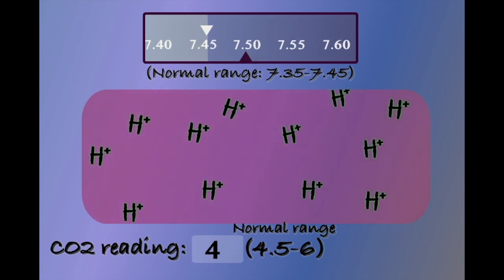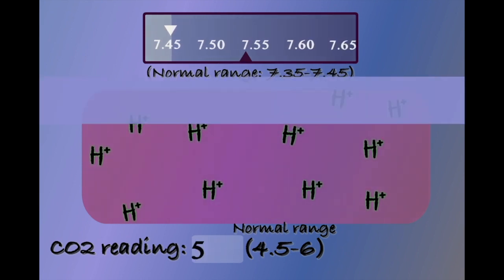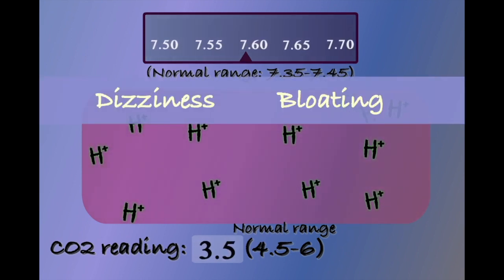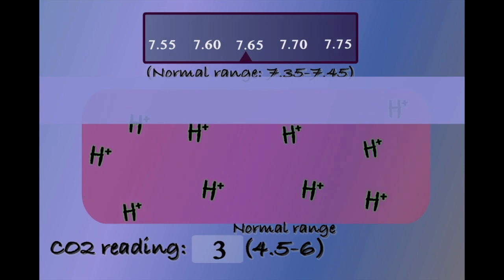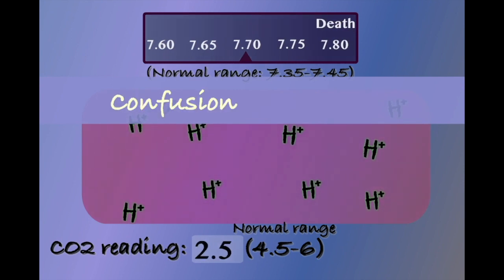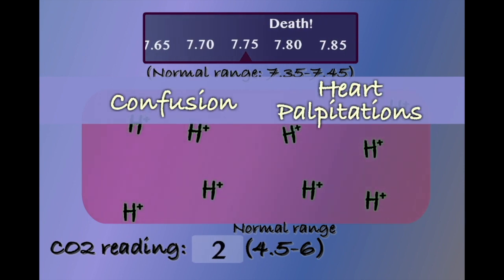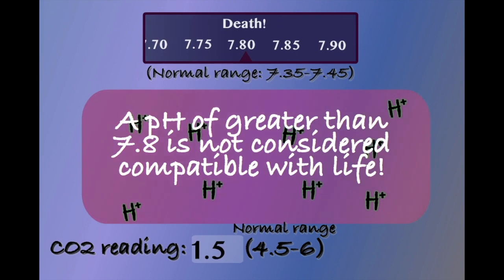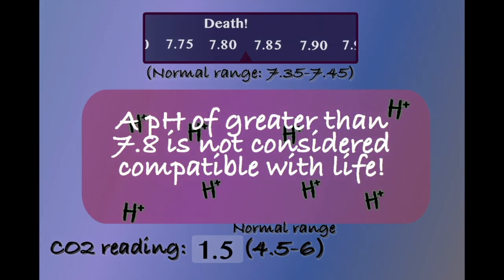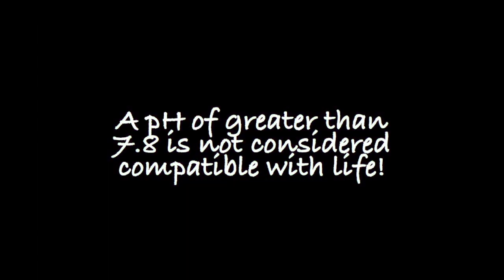Symptoms of respiratory alkalosis can include dizziness, lightheadedness and bloating. Moving on to more serious complications, such as confusion and heart palpitations. A pH of greater than 7.8 is not considered compatible with life, although this is extremely unlikely from purely respiratory mechanisms.